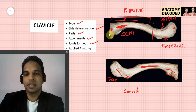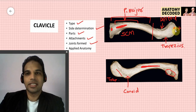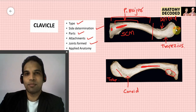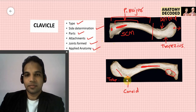Regarding joints formed by the clavicle: the medial end articulates with the sternum forming the sternoclavicular joint, which is a saddle variety of synovial joint. The lateral end articulates with the acromion process of the scapula forming the acromioclavicular joint, which is a plain variety of synovial joint.